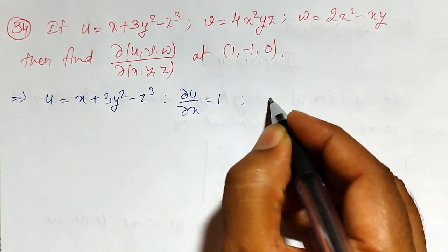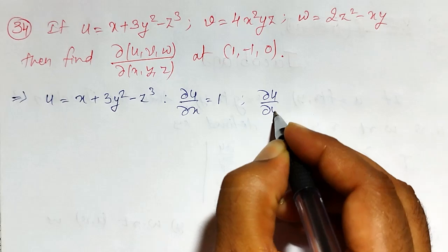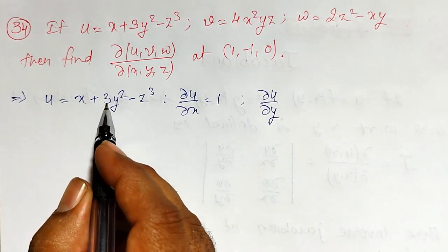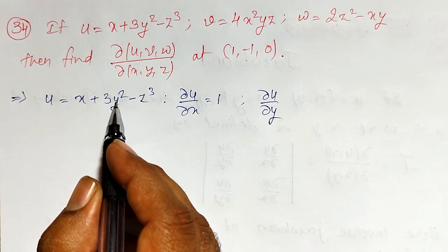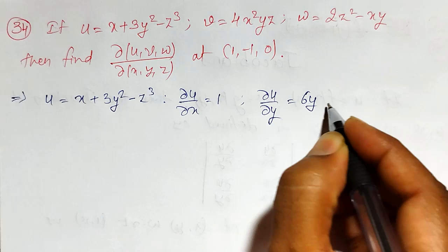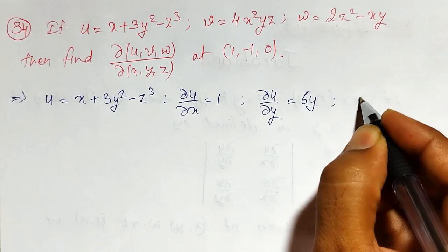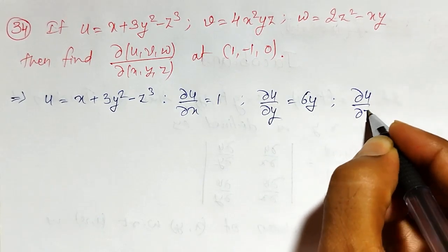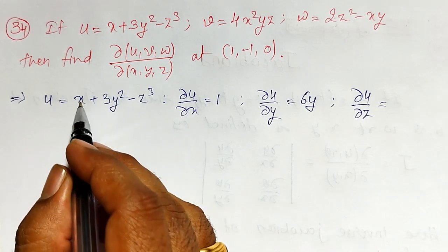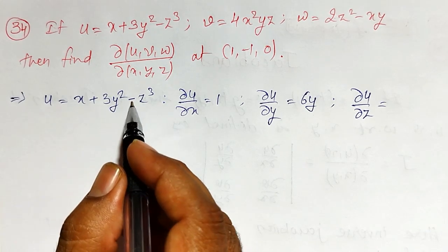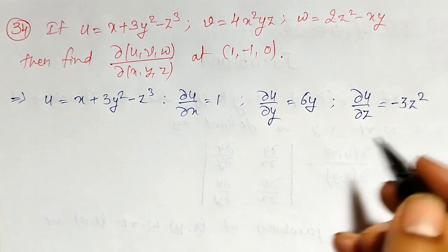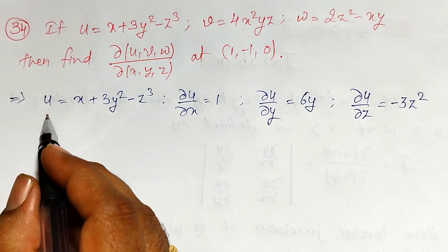Next, ∂u/∂y: partial derivative of 3y squared with respect to y is 2y, so 2 times 3 equals 6y. The first and last terms are 0. Then ∂u/∂z: the first two terms are 0, and differentiating minus z cubed gives minus 3z squared. Those are all three partial derivatives of u.